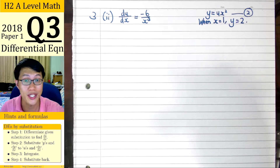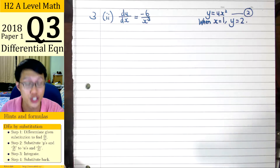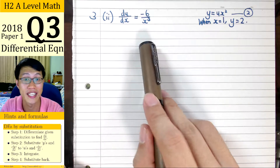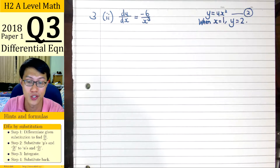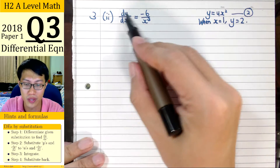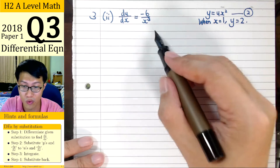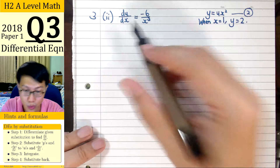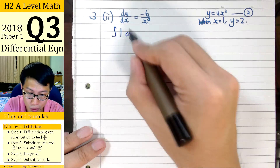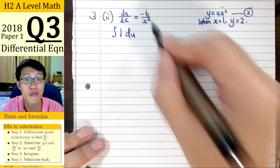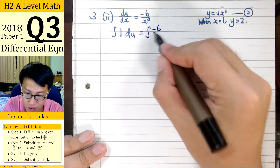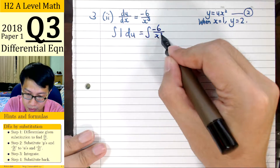For Part 2, we proceed to solve the differential equation using the substituted version from Part 1, since this is the one we can integrate. So du/dx equals minus 6 over x cubed. On the left, we integrate with respect to u, giving us the integral of 1 du. On the right, we integrate with respect to x: the integral of minus 6 over x cubed dx.